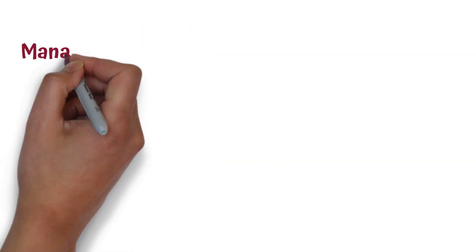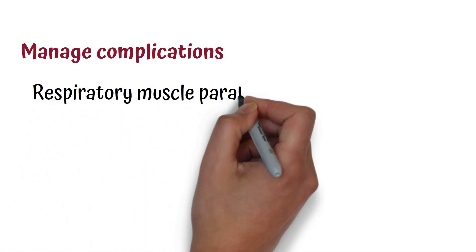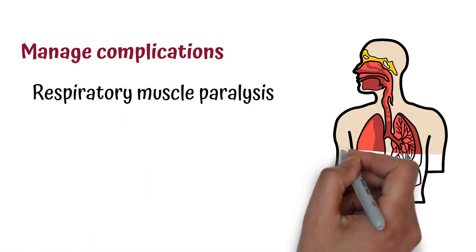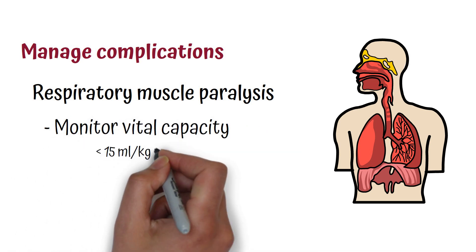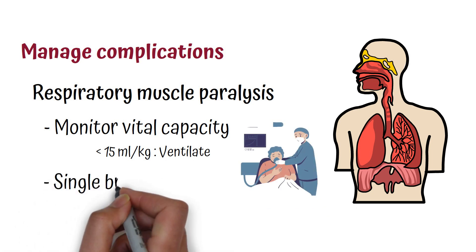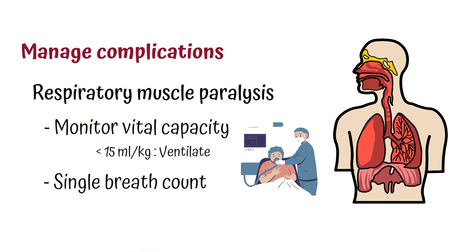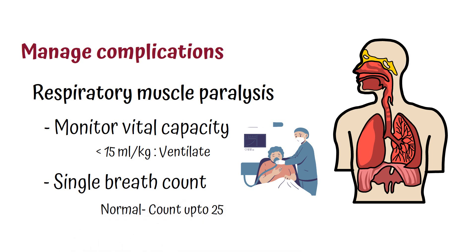We also have to monitor and manage complications. For respiratory muscle paralysis, we monitor vital capacity. If vital capacity goes below 15 millilitres per kilogram, the patient should be ventilated. If vital capacity cannot be monitored, a single breath count can be done — ask the patient to take a deep breath, hold, and count as far as possible. Normally patients should be able to count up to 25. If this is progressively declining, the patient should be admitted to the ICU.